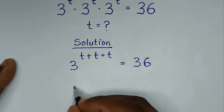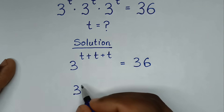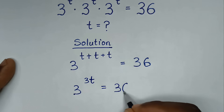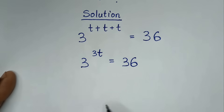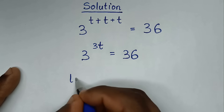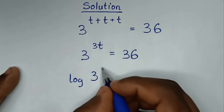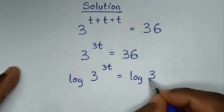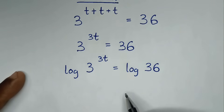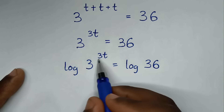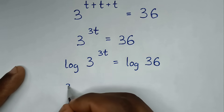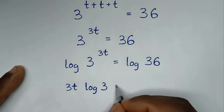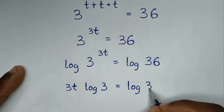Then in the next step, it will be 3 to the power of t plus t plus t, which is 3t, is equal to 36. Then we will apply log to both sides. So it will be log of 3 to the power of 3t is equal to log of 36. Then the power 3t will move to the front, so it will be 3t times log of 3 is equal to log of 36.